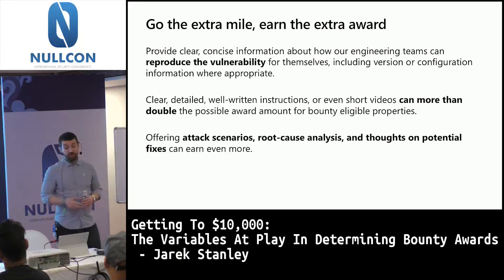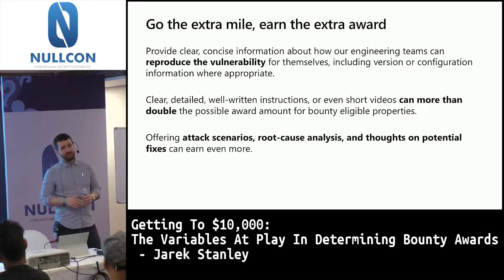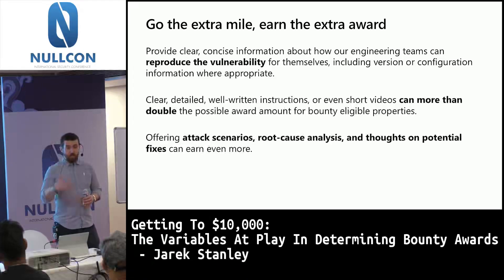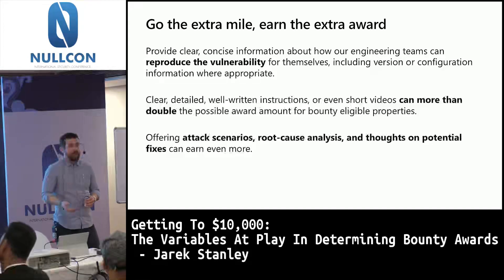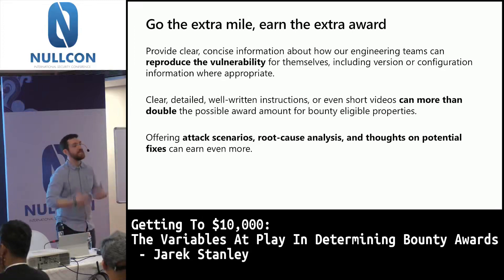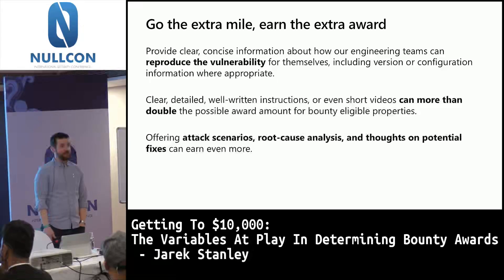Providing clear, concise information about the vulnerability — including version and configuration data where possible — really improves our ability to begin reproducing the vulnerability, respond to you fast with in or out of scope determination, and award a bounty. Well-written instructions and well-thought-out reproduction steps in the Cloud bounty can more than double the award for the same vulnerability. If you can also talk about attack vectors, root cause analysis, and potential fixes, that will take it even further — it's more valuable for our customers and we really want to reward you for that effort.